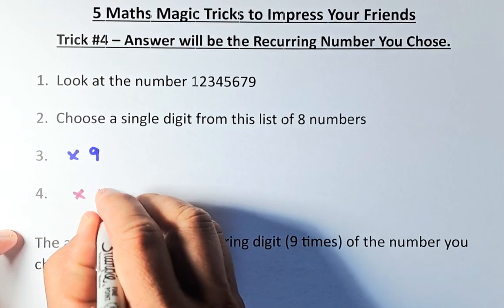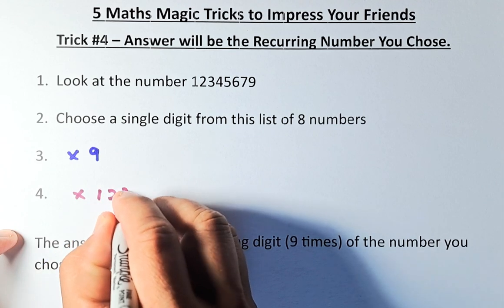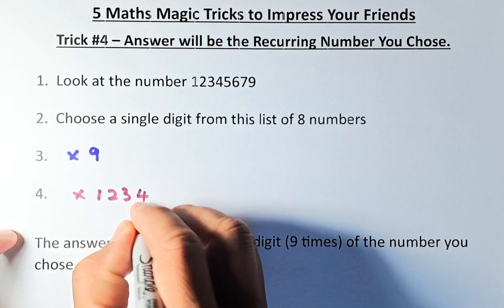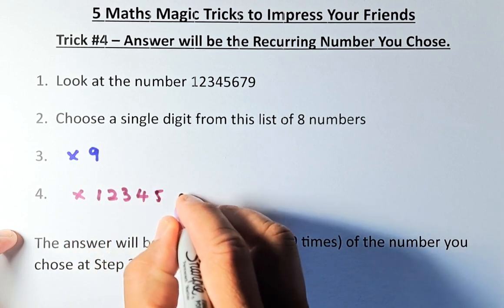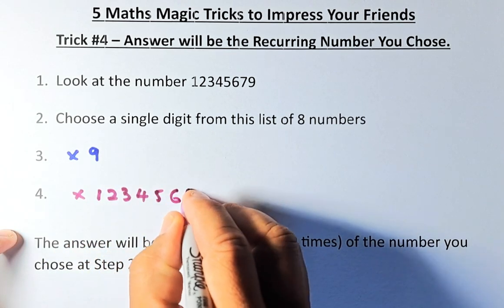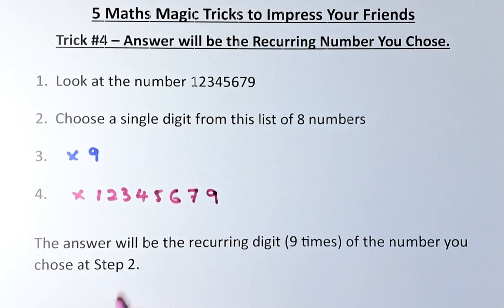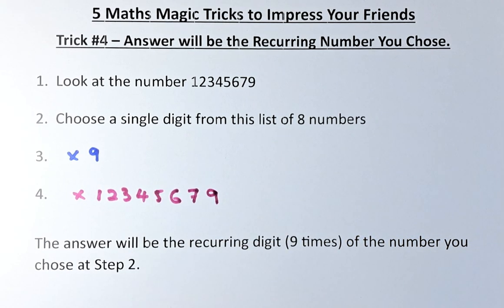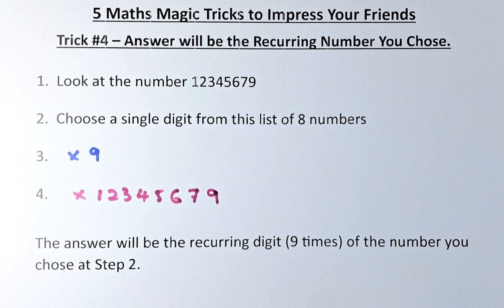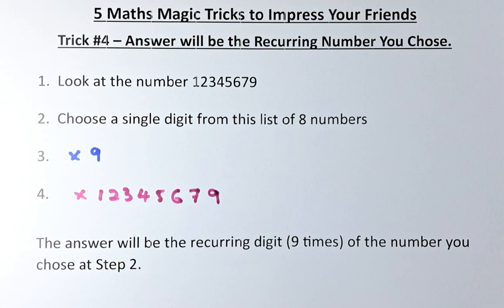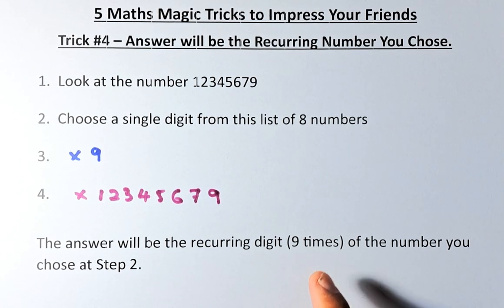The result is going to be 1, 2, 3, 4, 5, 6, 7 — and remember there is no 8 — 9. Multiply by that number in your calculator and abracadabra, you will get the answer of whatever number you have chosen, recurring 9 times.